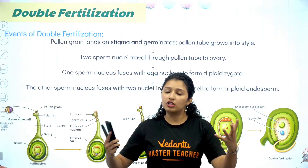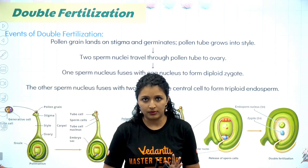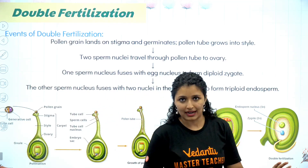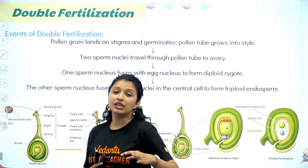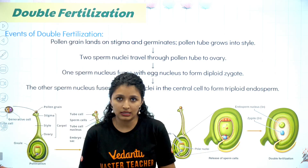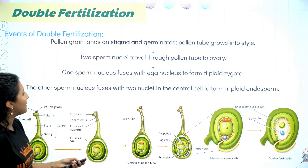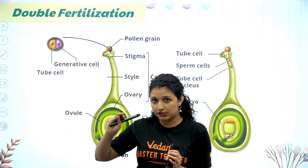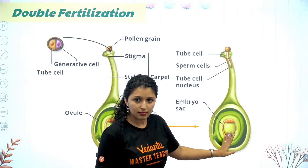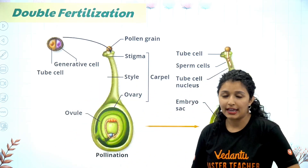We covered how spores are formed, how gametes are formed, and then gamete transfer — that's gametogenesis and gamete transfer. Pollination required a lot of steps, and it has finally reached. We also covered pollen-pistil interaction, outbreeding devices — how the anther falls on the stigma, the pollen tube forms and grows downward.